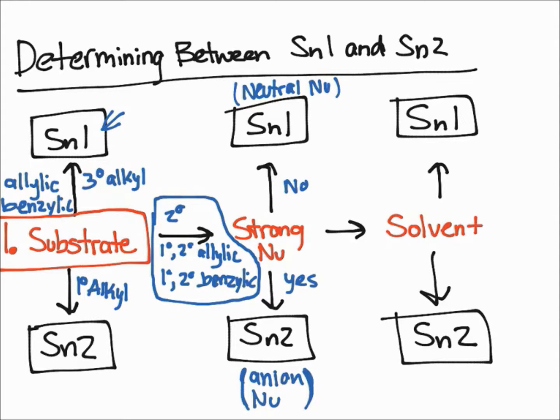And then if you're still not sure at this step, which is very rare, let me write if you're still not clear at this step, then you're going to look at the solvent if they even give you the solvent. For solvents, we talked about in a previous video, if you have a polar aprotic solvent such as acetone, for example, polar aprotic solvents are going to give you an SN2 reaction, while a polar protic solvent such as water or alcohol is going to give you an SN1 reaction.